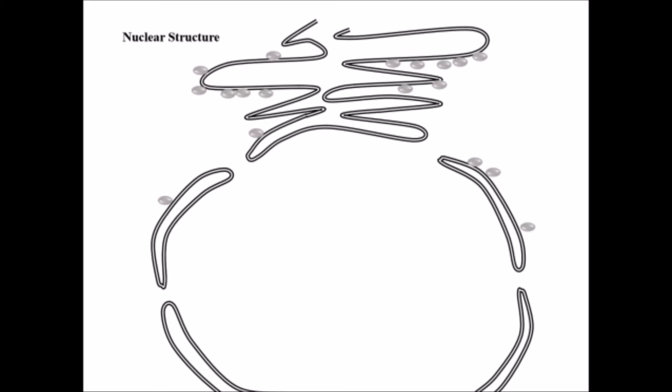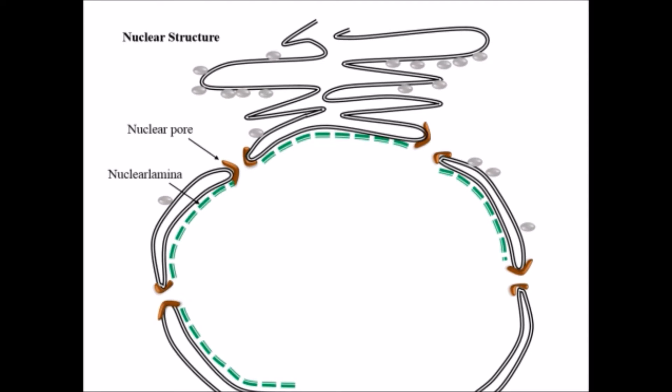Small molecules can easily pass through the nucleus, but macromolecules — proteins — need to be transported across the nucleus specifically, due to the presence of nuclear pores. These nuclear pores provide passage across the nucleus, but in a very regulated manner. The nucleus is also supported by nuclear lamina, a cytoskeleton that provides structure and shape to the nucleus.